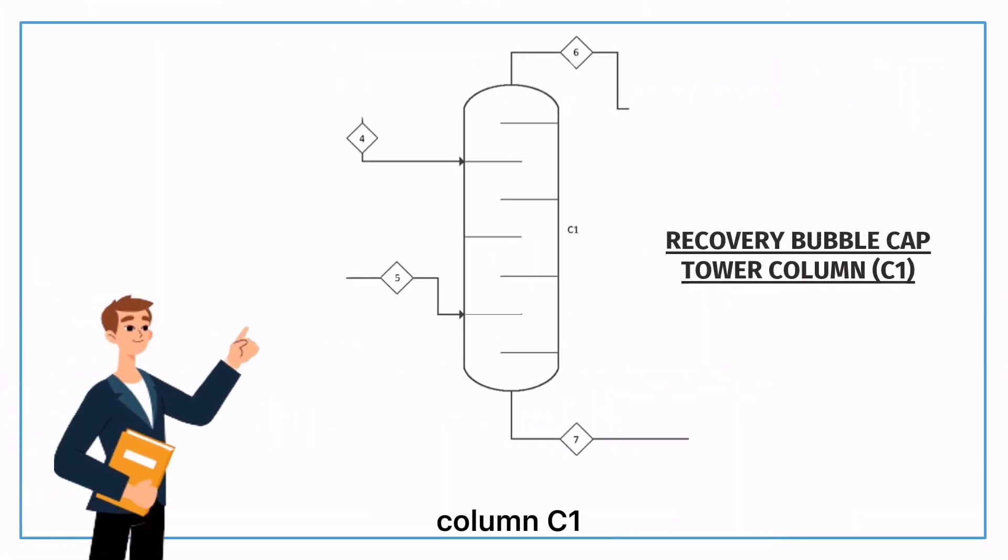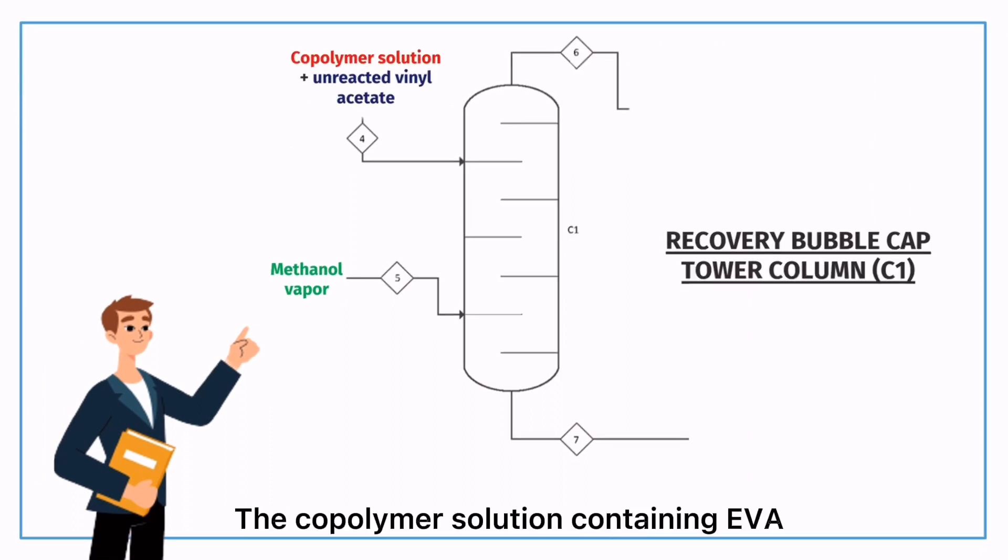In the recovery bubble cap tower column C1, methanol vapor is used as solvent to separate the unreacted vinyl acetate from the copolymer solution. The copolymer solution containing EVA copolymer and methanol will be removed as the bottom product of the C1.